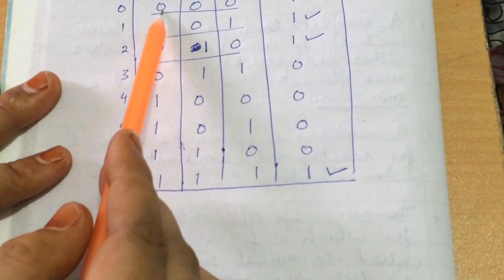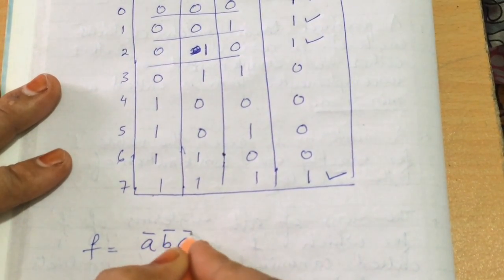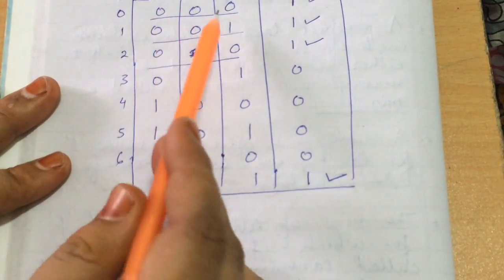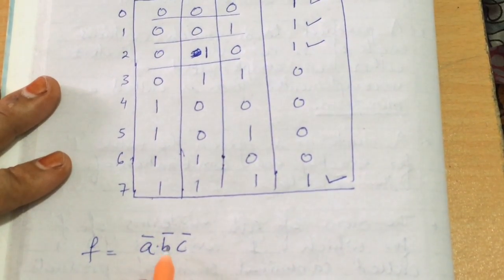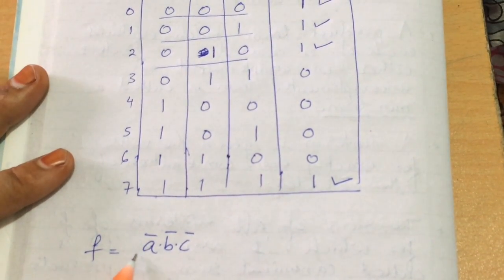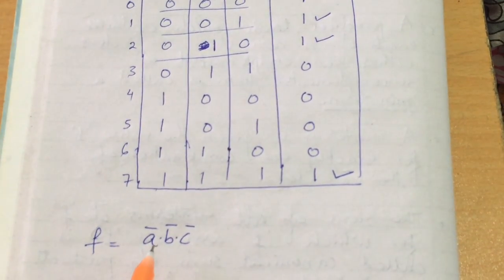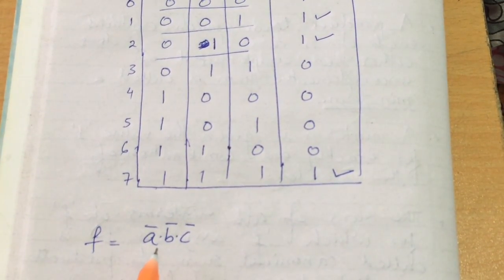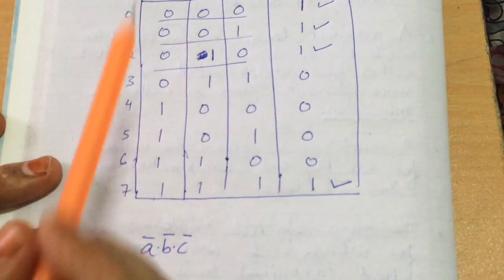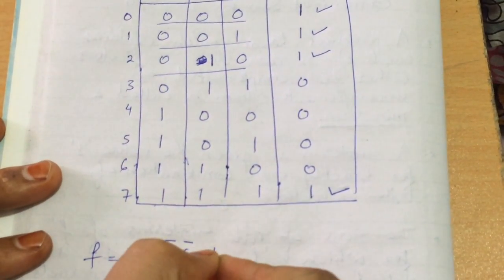When writing in terms of min terms, we look at the values of A, B, C for each row. For row 0, since A is 0, B is 0, and C is 0, we write it as Ā B̄ C̄. We write it in product form: Ā·B̄·C̄ (the dot means AND). When a variable is 0 we write it in complemented form.